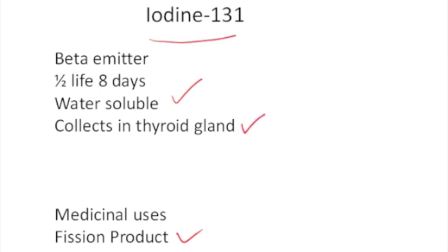So the problem is that if iodine-131 accidentally gets into the environment, say from a nuclear power plant, it will dissolve in water so it can get in the groundwater. And then if you happen to drink the water or you eat something that has that iodine in it, then you could be exposed to this iodine-131 and it will collect in your thyroid gland.